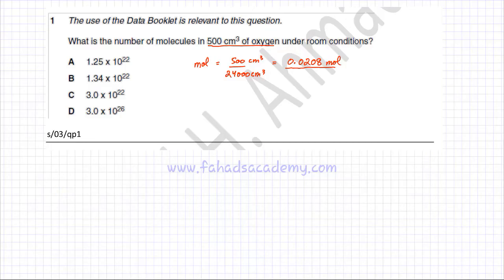Now we found the moles of oxygen, and we need to find the number of particles. To find the number of particles, you multiply by 6.02 × 10²³.